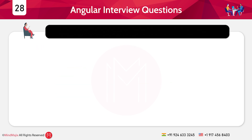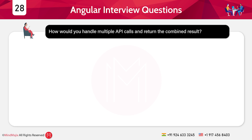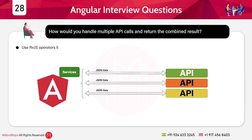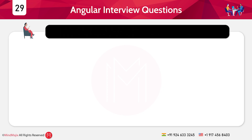The twenty-eighth question: How would you handle multiple API calls and return the combined result? Use RxJS operators like forkJoin, combineLatest, or mergeMap to combine multiple API responses at a time.